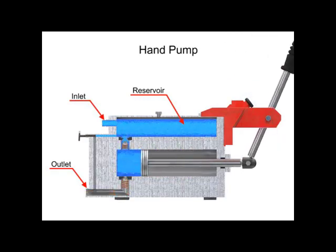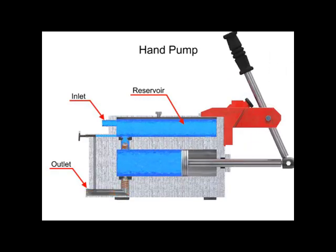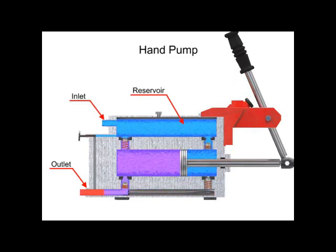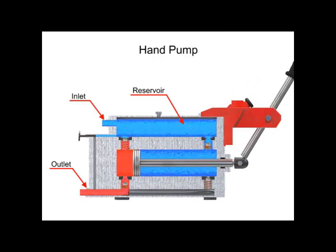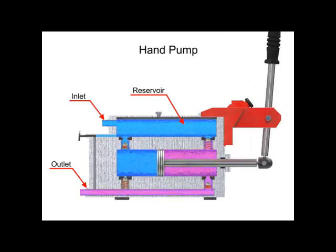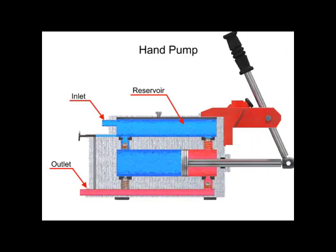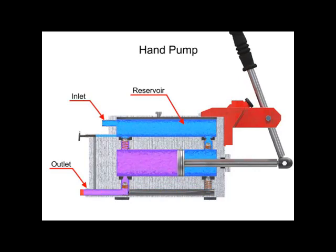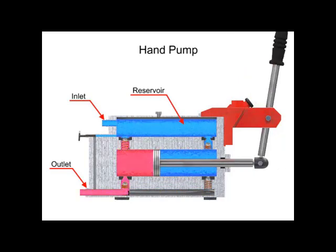Double acting hand pumps are more efficient, allowing fluid to both enter and discharge on both strokes of the piston. Moving the pump handle in either direction allows fluid to be drawn in from the reservoir and discharged via the outlet ports.